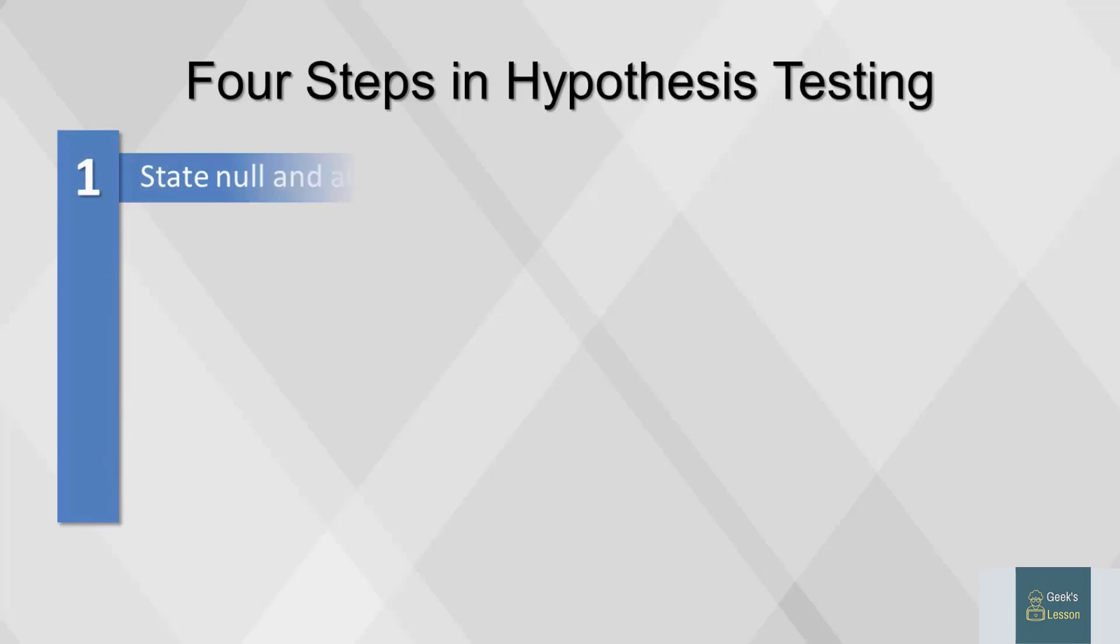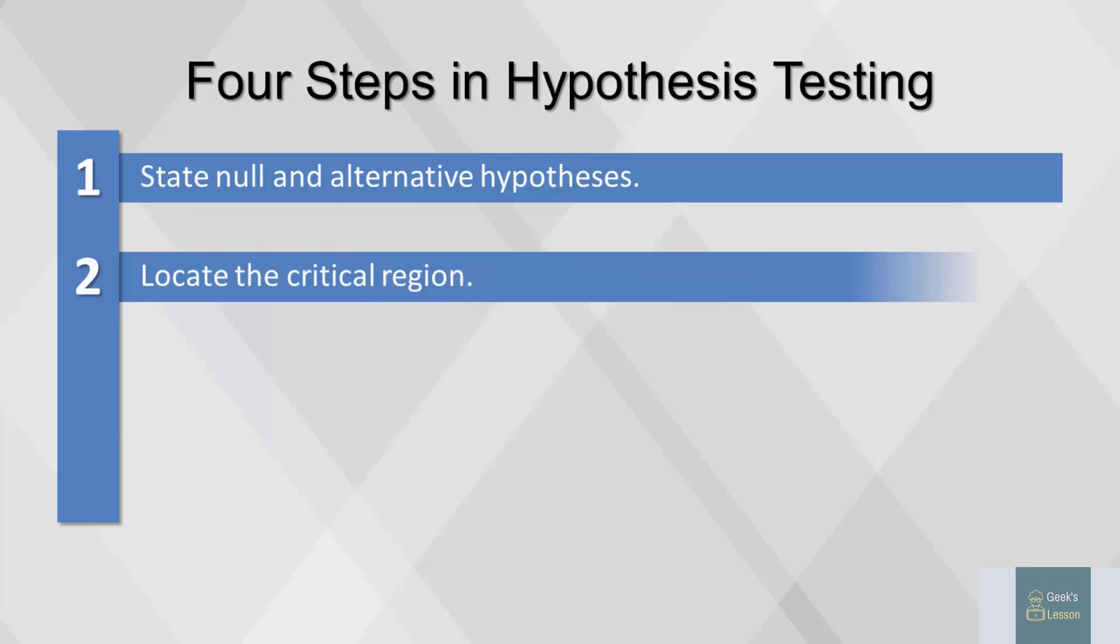The first step is stating the null and alternative hypotheses. We have to establish what we are testing to be true. Once we do that, we have to decide how close to true our sample statistic has to be for us to accept the truth. For example, we might want our estimate to be accurate with a 5% margin of error. This is called locating the critical region.